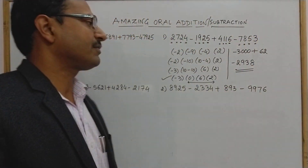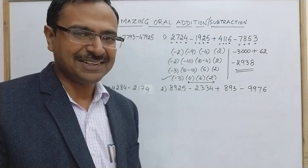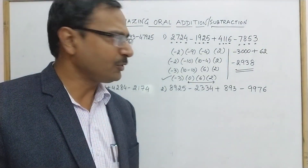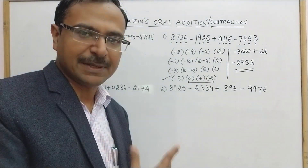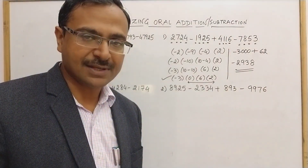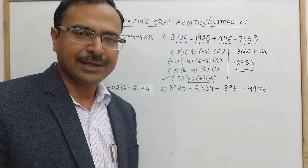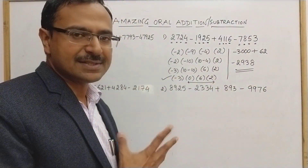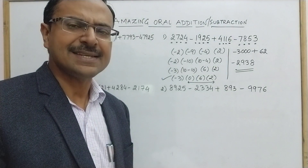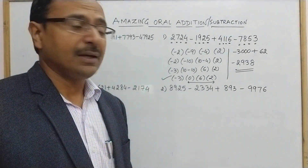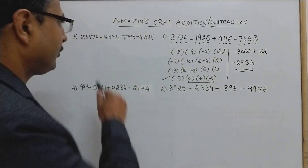The answer to the first question is minus 2938. You can check it — everything is logically and mathematically justified. Let's now see the second question. I will not skip any steps here, and for the remaining two questions I will skip some steps.